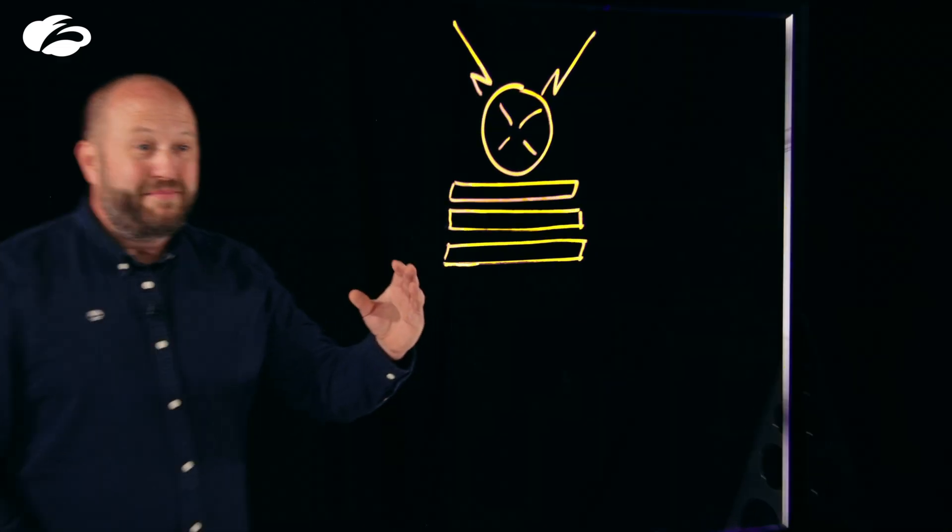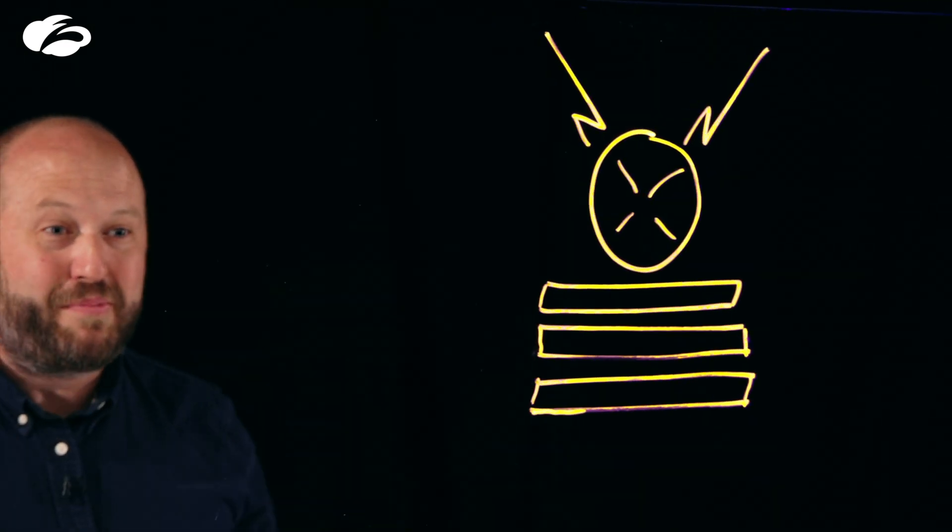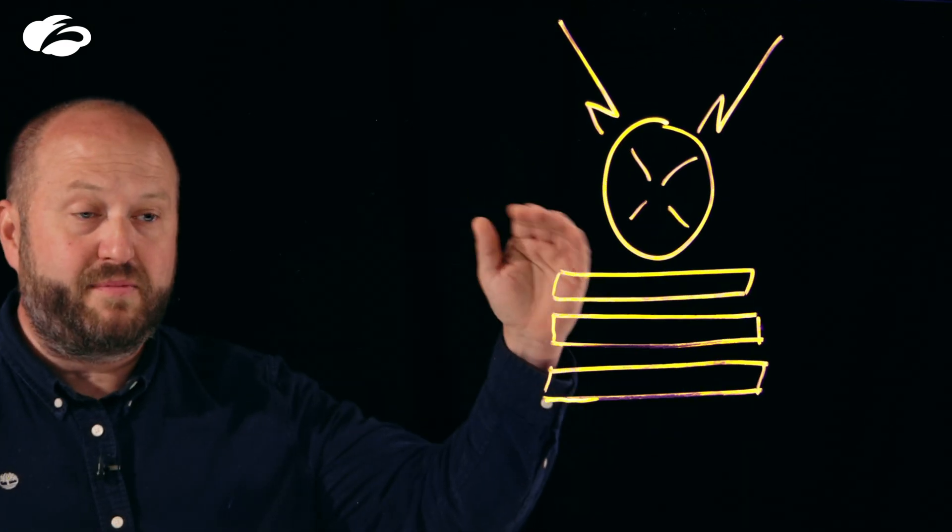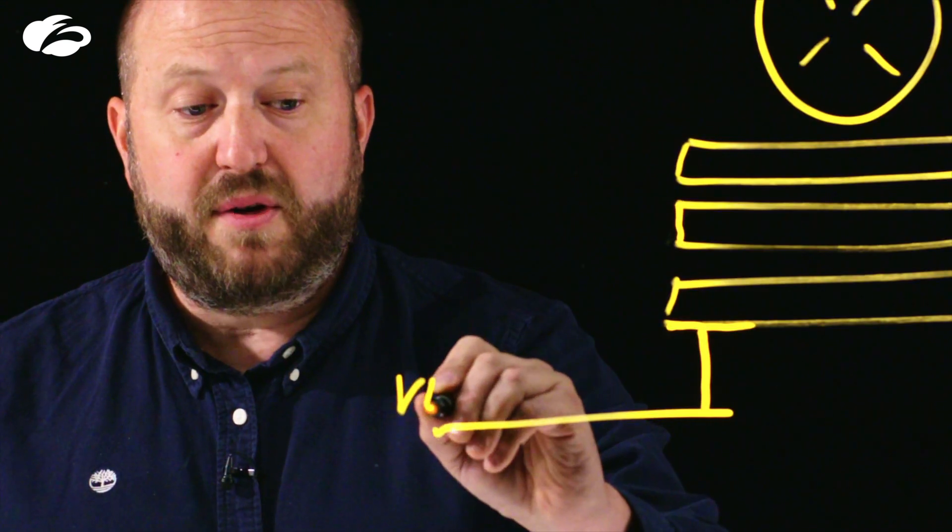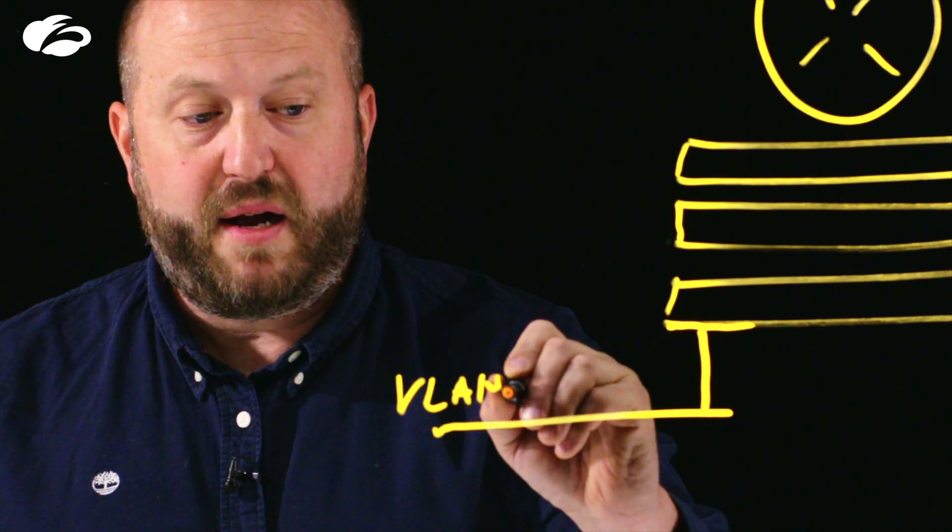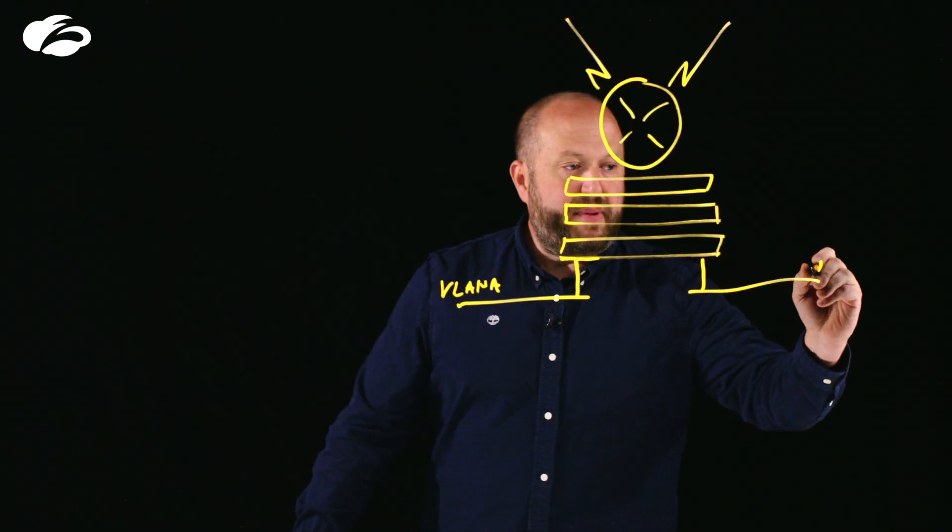So over here we've got a really simple diagram showing a corporate network with your WAN connections and routing at the top, your core network and switching down below that. And then most networks have begun to segregate traffic generally based on VLAN. So we'll put VLAN A here and VLAN B over here.